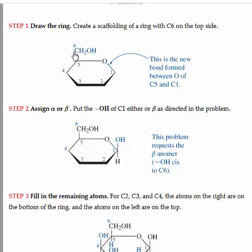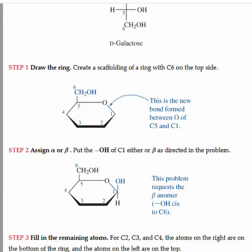We will also always write our C6 above the ring, and C6 will always be CH2OH. Once we have our basic skeleton of this pyranose ring,